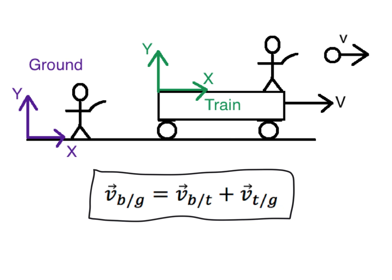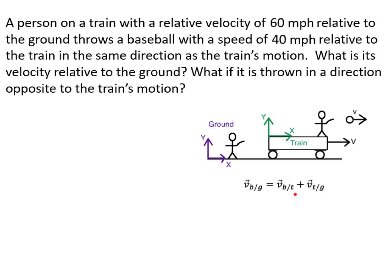Here's the same example with numbers. A person on a train moving at 60 miles per hour relative to the ground — the velocity of the train relative to the ground is 60 mph in the x-hat direction. We're also told the baseball is thrown at 40 miles per hour relative to the train in the same direction, so the velocity of the ball relative to the train is 40 mph in the x-hat direction.